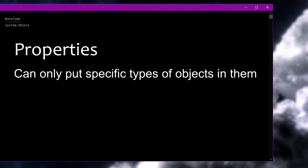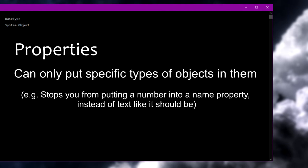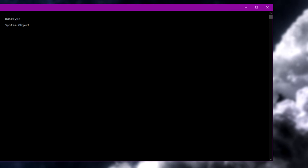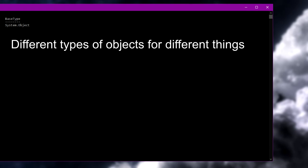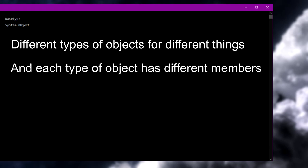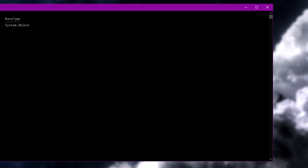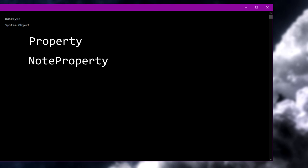This is actually a really good thing, because it stops you from potentially doing stupid stuff like putting a number object into the name property of a file, and it means that all the code inside .NET that works with file objects knows there will always be a String object in that property. We have different types of objects for different things, and each different type of object is made up of different members — meaning all the smaller stuff in the object. We know two kinds of members so far: regular properties and note properties.